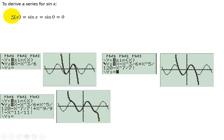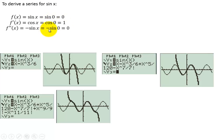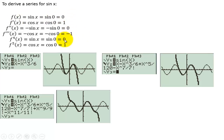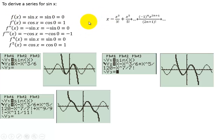To derive a series for sine of x, we take f of x is sine x — this is a Maclaurin series, so we're centering at 0. Sine of 0 is 0. The derivative is cosine, that's 1. Derivative of that is negative sine, that's 0. Derivative of that is negative cosine, that's negative 1. So the values alternate between 0, 1, 0, and negative 1. That means we eliminate some terms because the derivative is 0. So f of x gives us 0 plus 1 times x, plus 0 times x squared, minus 1 times x to the third — so we get the odd terms alternating in sign.